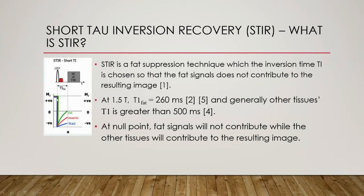Therefore, at these null points, if the standard MRI sequence — in this case spin echo or fast spin echo — is started, then the fat signals will not contribute to the resulting image while the other tissues will contribute.